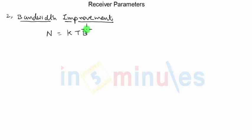If any system or receiver is receiving a signal in a specific bandwidth, then the noise power that will enter into the receiver will be directly proportional to that bandwidth over which the receiver is operating.